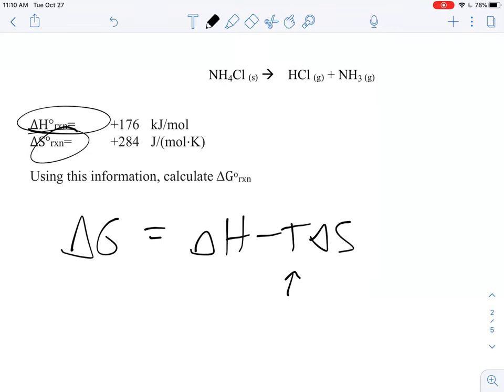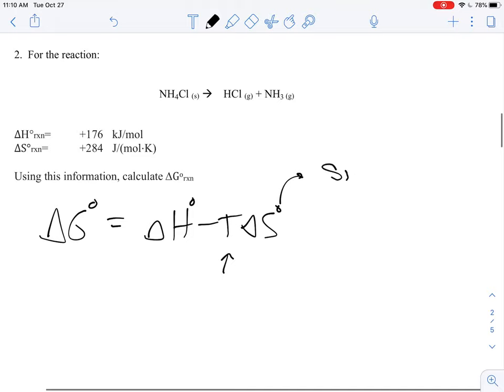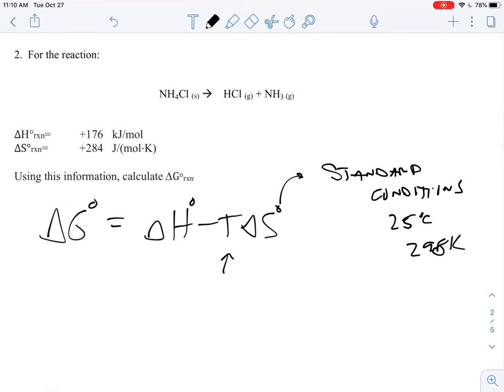Now what about the T? Well, to be honest, I got a little lazy here because I need to put the little zeros that are up here. Because remember, the little zeros mean that you are at standard conditions. And if you are at standard conditions, then you are at 25 degrees Celsius or 298 Kelvin. So sometimes I get a little lazy with those things, but they are indeed there.